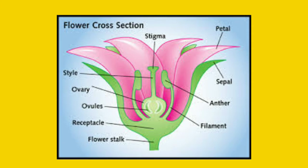A complete flower is when all the accessory and essential organs — calyx, corolla, androecium, and gynoecium — are present in the same flower. An incomplete flower is when any of the accessory or essential organs is not present. For example, in a unisexual flower, either the androecium or the gynoecium will be present but not all four whorls, making it an incomplete flower.